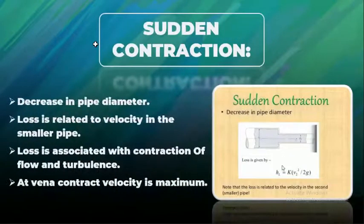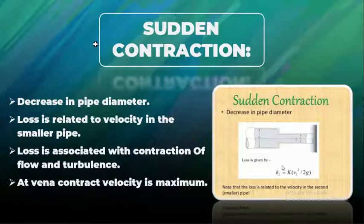Now we will discuss losses due to sudden contraction. In this case, the diameter of the pipe is reduced suddenly due to contraction, and due to this, turbulence in the flow is created which leads to the formation of vena contracta.